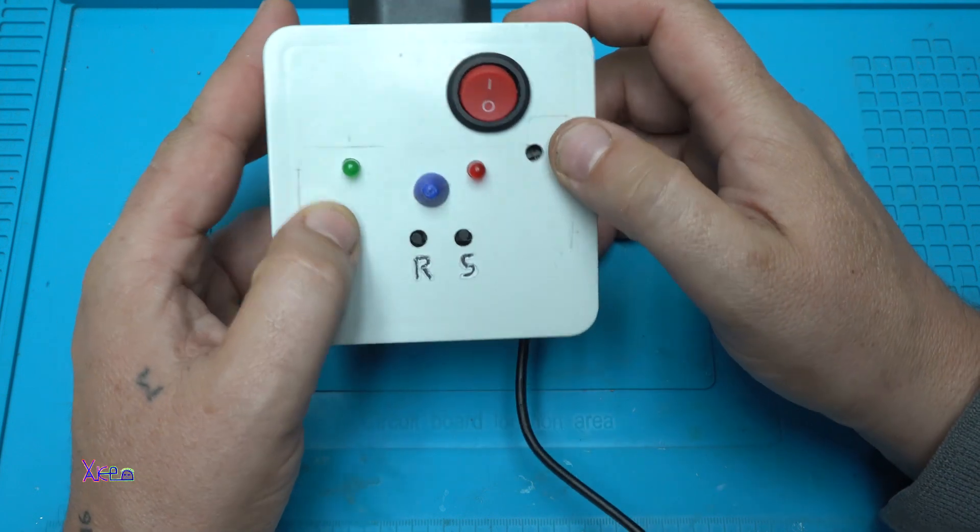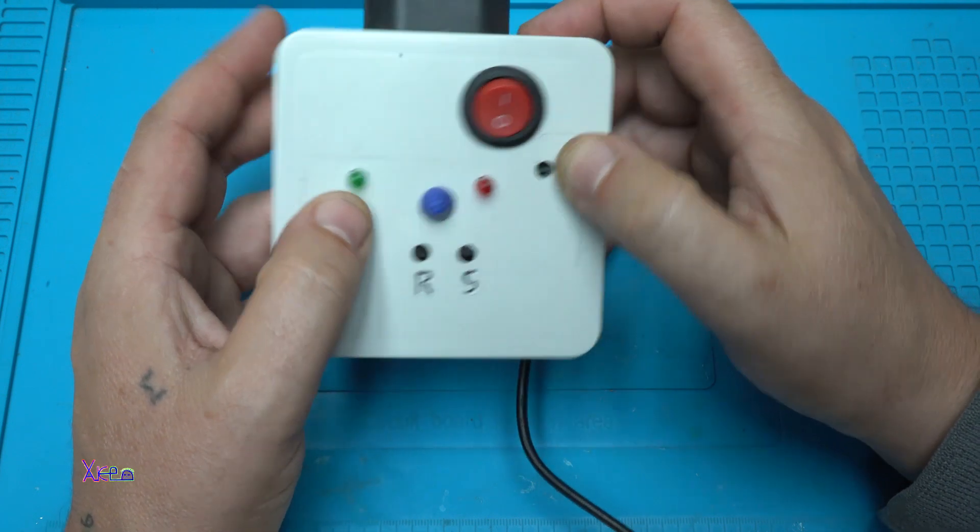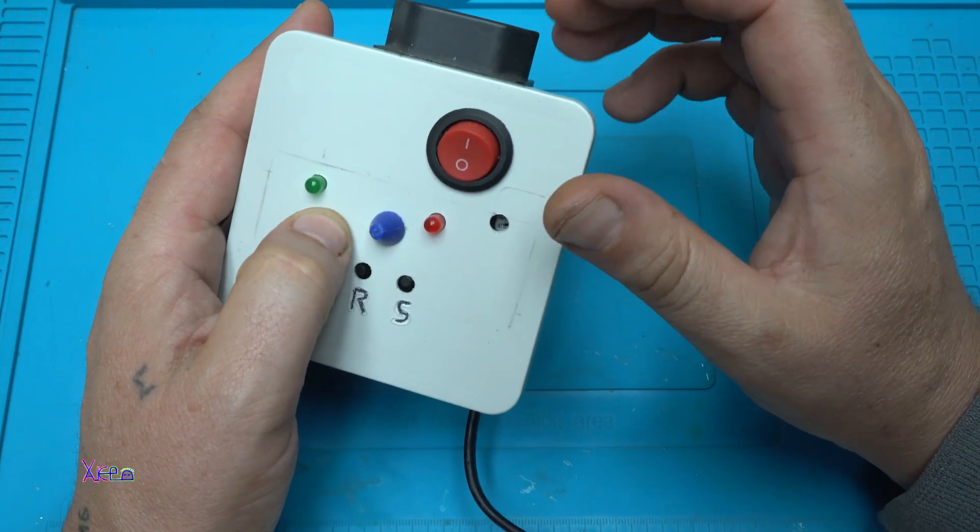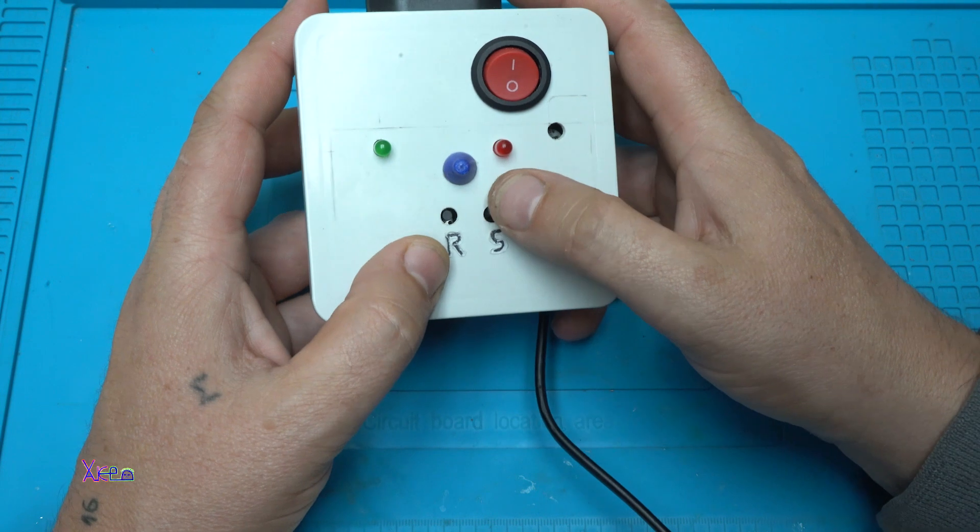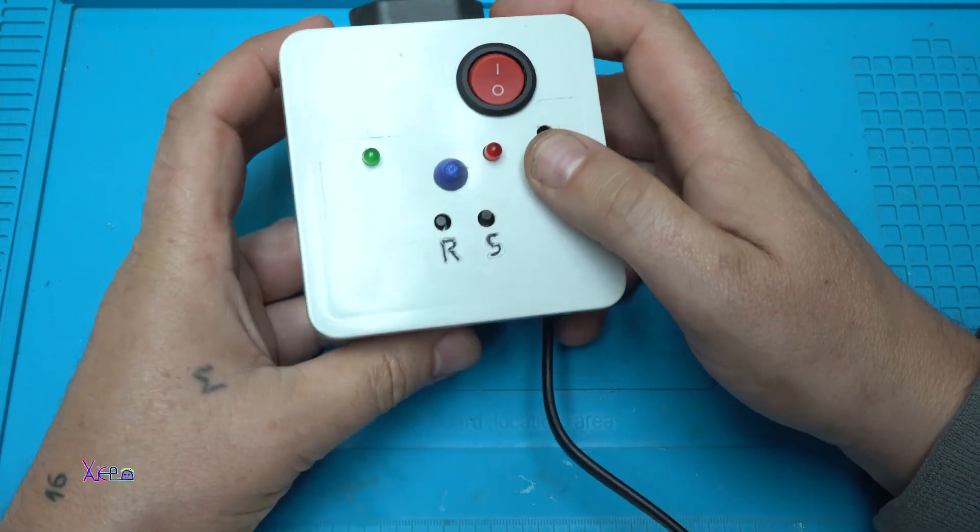For example, I have set it to 30 minutes and after 30 minutes the soldering iron will be turned off. This is start and reset. Let's see inside.